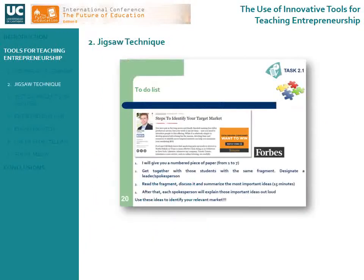Another technique we use is the jigsaw technique. Due to restrictions in the number of students and in time, we usually perform an adaptation of the jigsaw technique. With this technique, students have the opportunity to become experts in a particular subject and share that knowledge with their peers. The jigsaw technique consists of several stages. First, the students make small groups and allocate each one a number, for example from 1 to 7. Second, they find others with the same number and create a separate group — the expert group — where they discuss their piece of the puzzle, a concept or, in our case, a segment of a text.